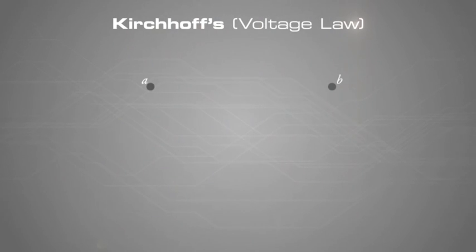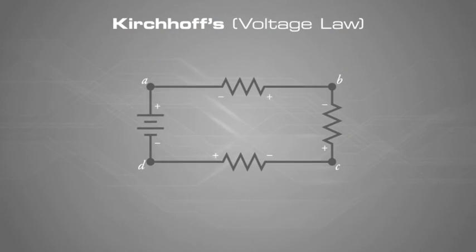Kirchhoff's voltage law, the principle of conservation of energy, implies that the directed sum of the electrical potential differences or voltage around any closed network is zero, or more simply, the sum of the electromotive forces in any closed loop is equivalent to the sum of the potential drops in that loop.